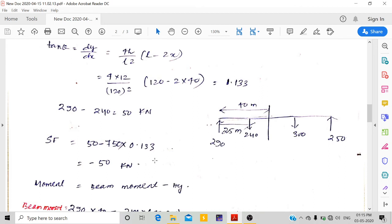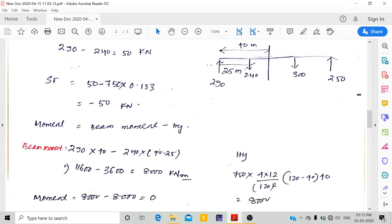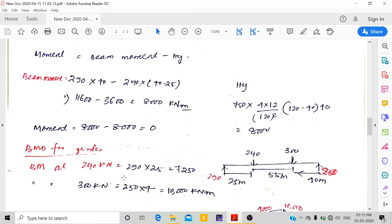Now for the moment: beam moment minus Hy. The beam moment is 290 times 40 minus 240 times (40-25), giving 8000. With H and y values calculated, the moment equals 0 at that point.